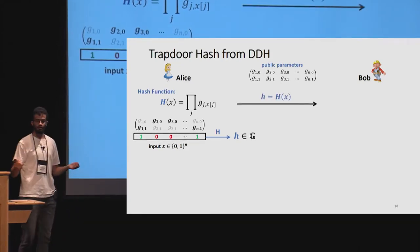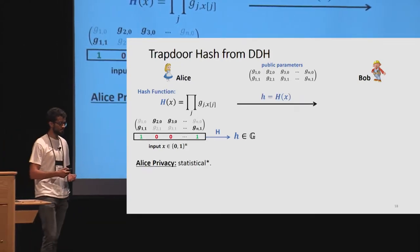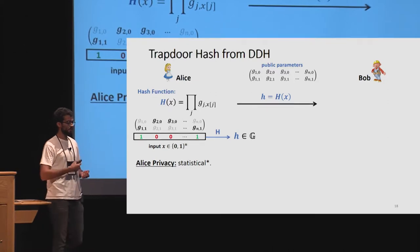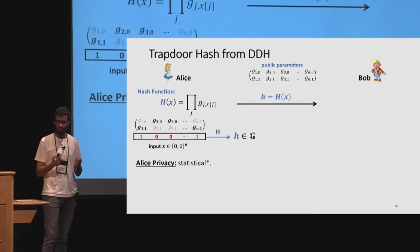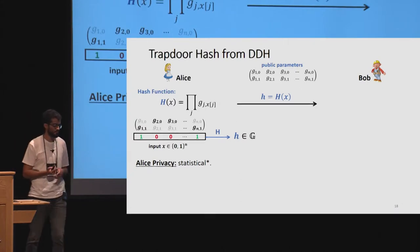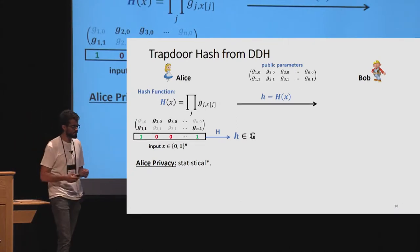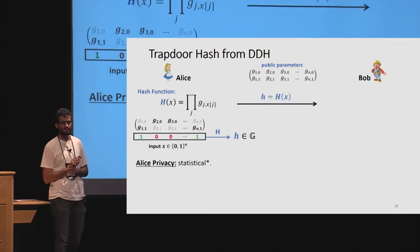Alice sends the hash to Bob. Note that without randomness this function cannot be private, but with a bit more effort we can achieve statistical privacy for Alice.